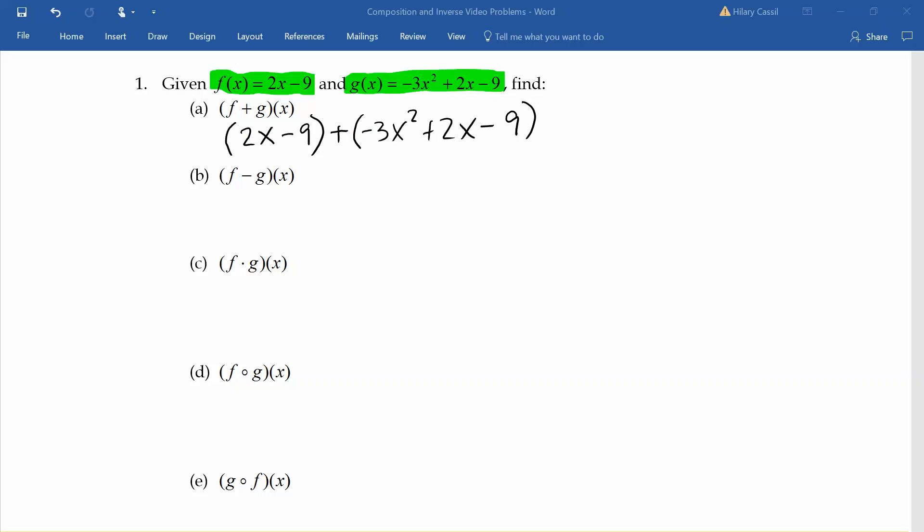It's always a good idea to use parentheses for these problems. Now we can just combine like terms, which leaves us with negative 3x squared plus 4x minus 18.